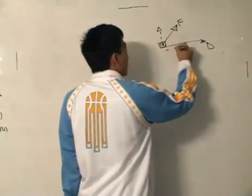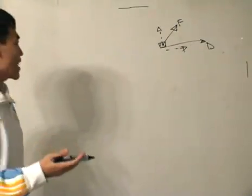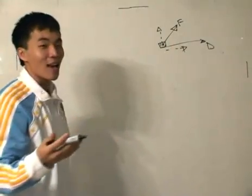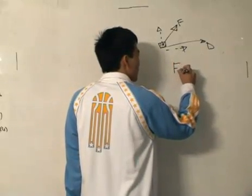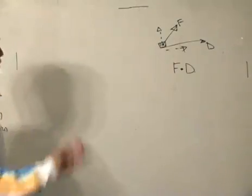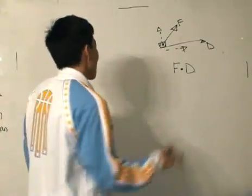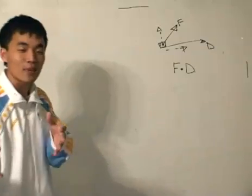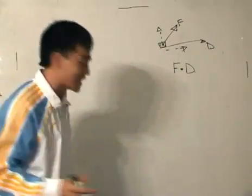Force F has a component along D and a component perpendicular to it. Only part of force F is actually used to push the box in direction D. The work done on the box by force F is F dot D — the dot product — because only the component of F in the direction of D contributes to the work done.